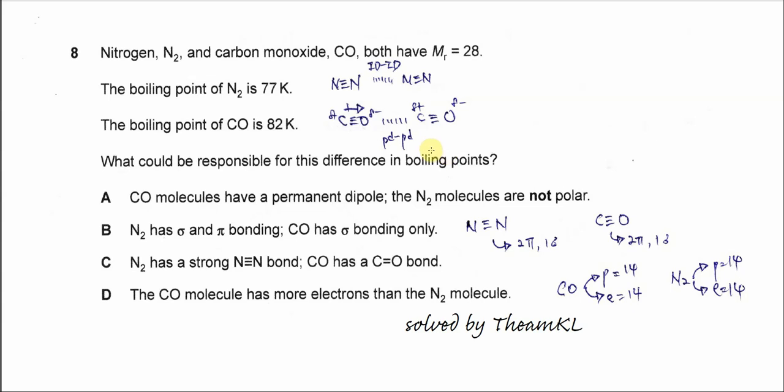Question 8. Nitrogen and carbon monoxide both have the same molar mass, which is 28. The boiling point of nitrogen is 77 Kelvin, and the boiling point of carbon monoxide is 82 Kelvin. What could be responsible for this difference in boiling point?